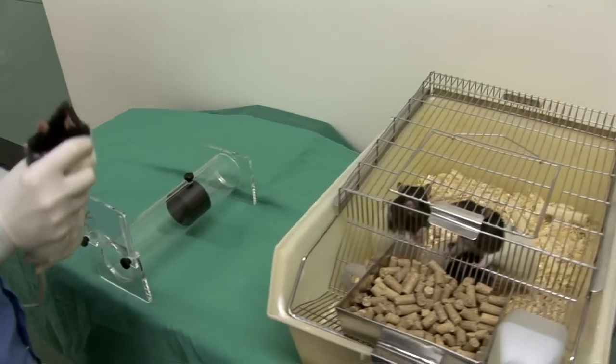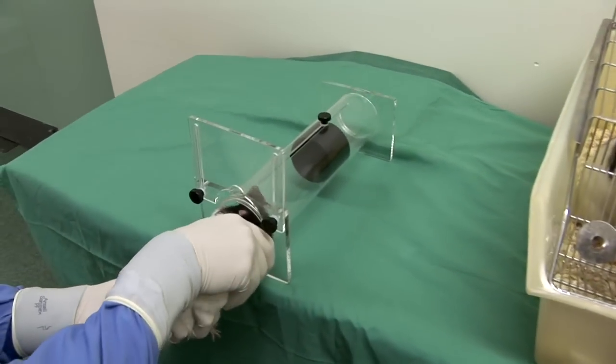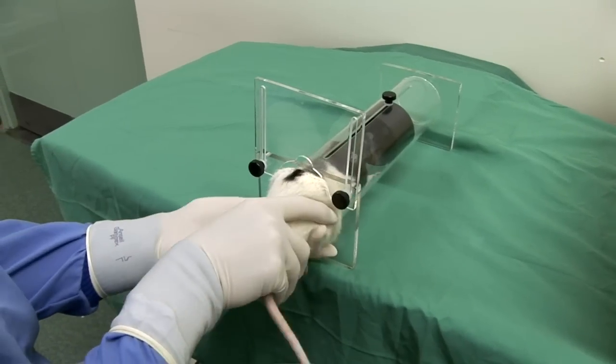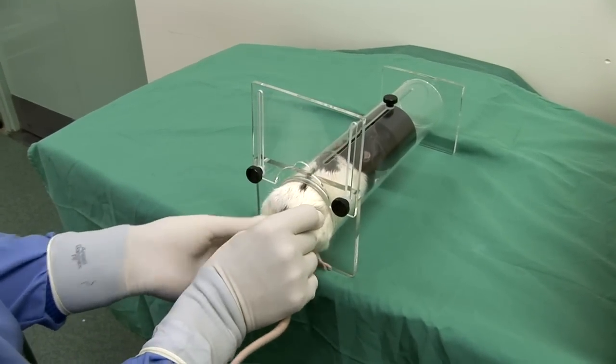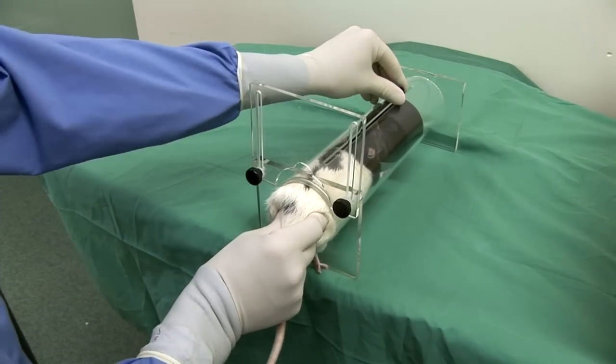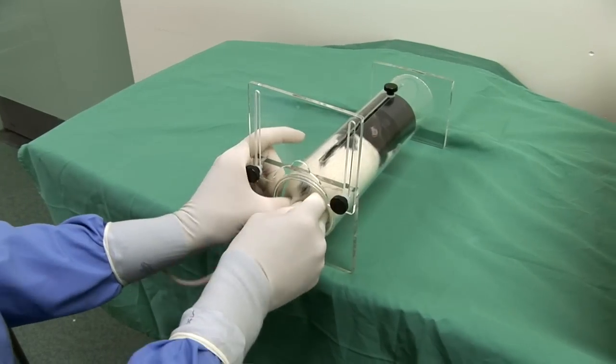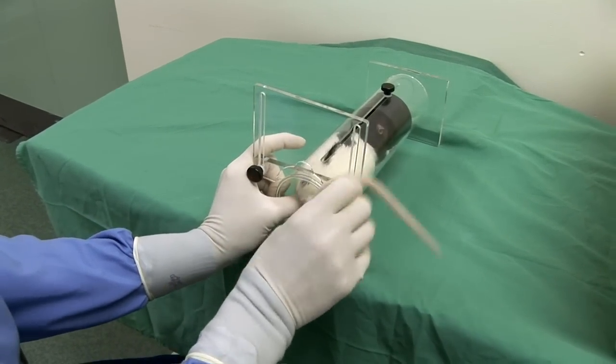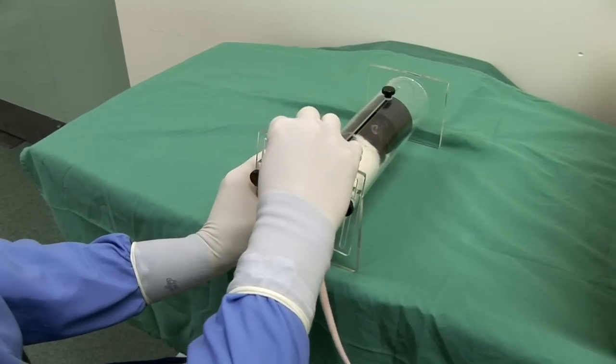The first rat to be injected should then be restrained smoothly without hesitation by grasping it around its shoulders and transferring it to a restraining device. This can be the rigid type shown here or a plastic or cloth flexible restraining bag or tube.